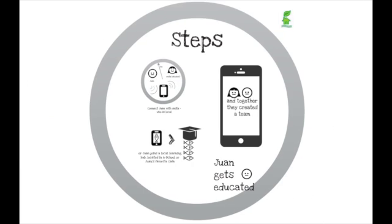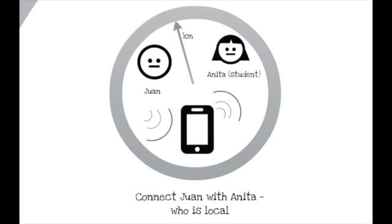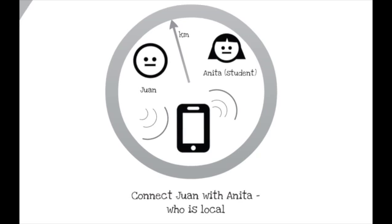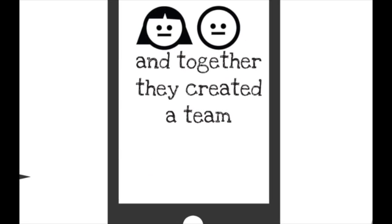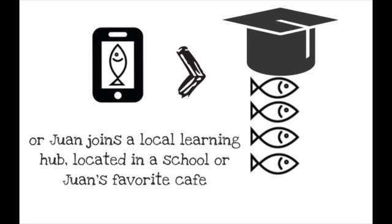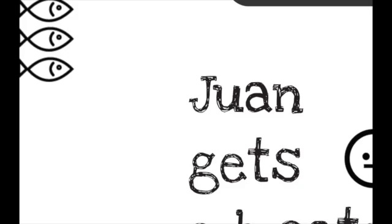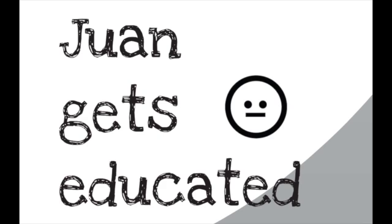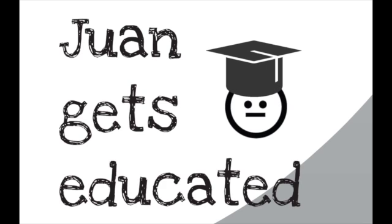So what are the steps we need to take? First of all, Juan needs to connect with Anita, and she's local. They get together and create a team. Or Juan joins a local learning hub located in a school or Juan's favorite cafe, gets his coffee. The important thing here is Juan gets educated.